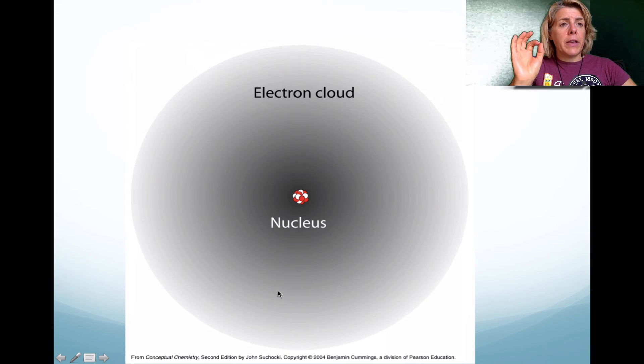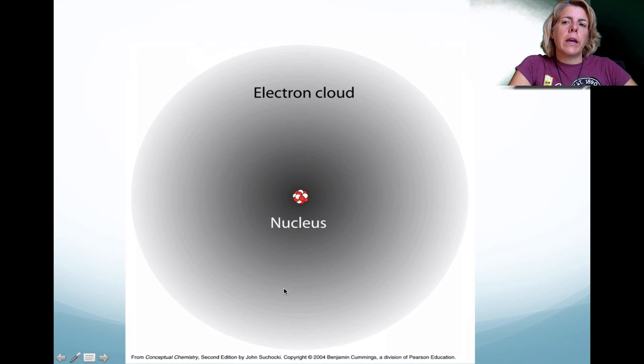So here is a modern day picture of what we know the atom to look like. And notice that the nucleus is very tiny compared to the overall shape of the atom. The electrons actually occupy a huge space within the atom. And we know now that the nucleus is tiny and positive.